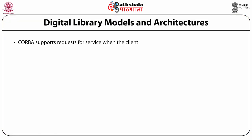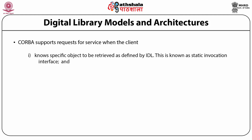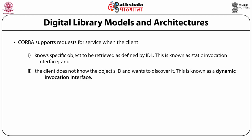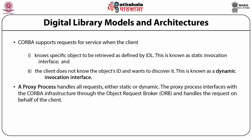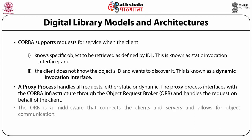CORBA supports requests for services when the client knows the specific object to be retrieved as defined by IDL — this is known as static invocation of interface. When the client does not know about object IDs and wants to discover them, this is known as dynamic invocation interface. A proxy process handles all requests, either static or dynamic. The proxy interfaces with CORBA infrastructure through the Object Request Broker and handles requests on behalf of the client. The ORB is middleware that connects the client and servers and allows for object communication. The ORB locates the target objects residing on different servers and routes requests to them through message passing.